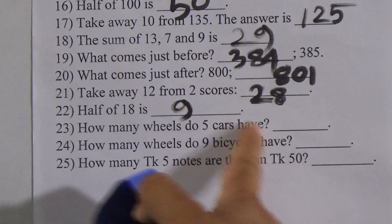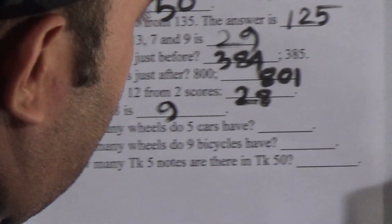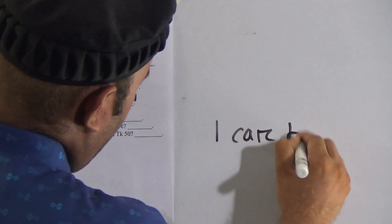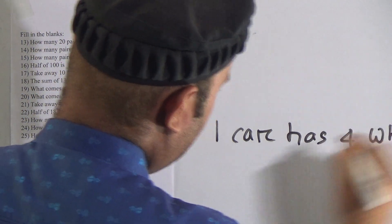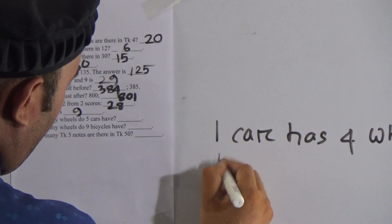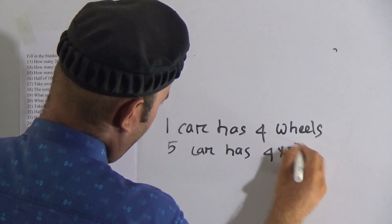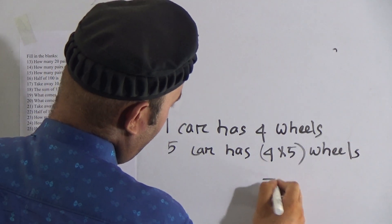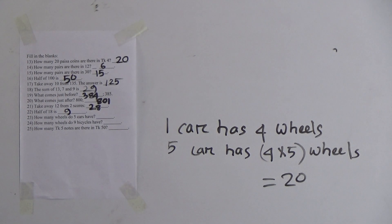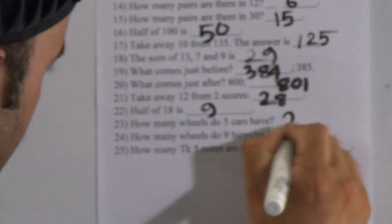How many wheels do 5 cars have? We know that a car has 4 wheels — one car has 4 wheels. Therefore 5 cars have 4 multiplied by 5 wheels. We know that 4 fives are 20. So how many wheels are there in 5 cars? The answer is 20 wheels.